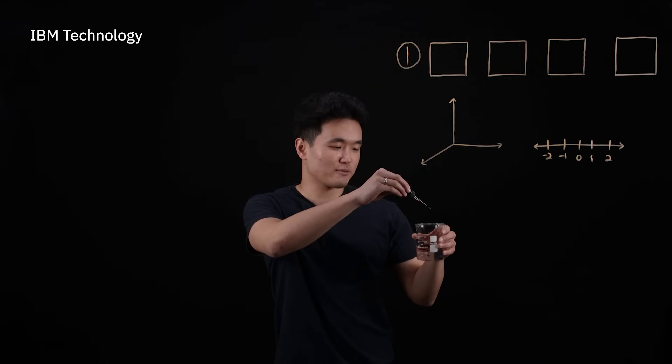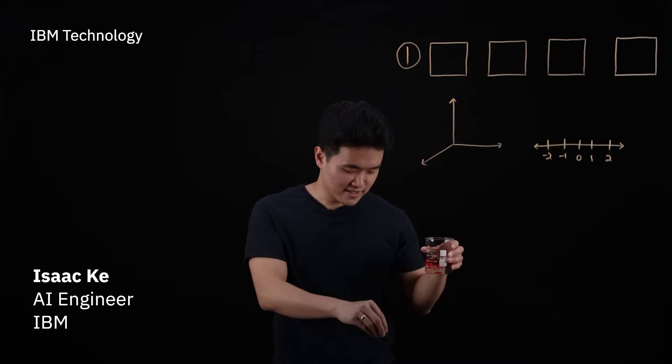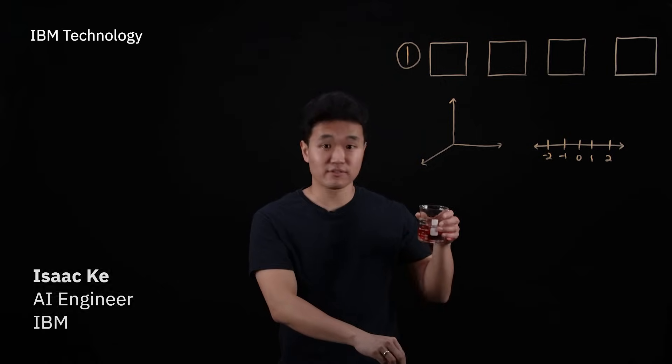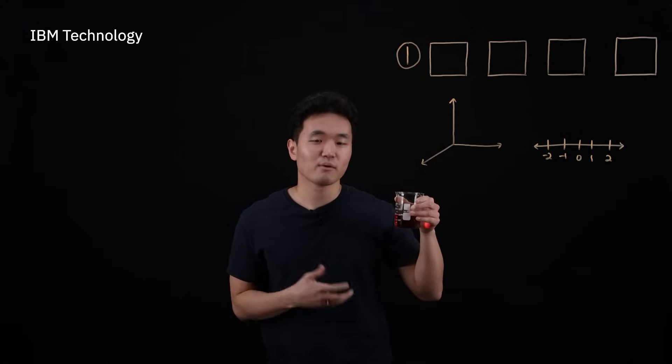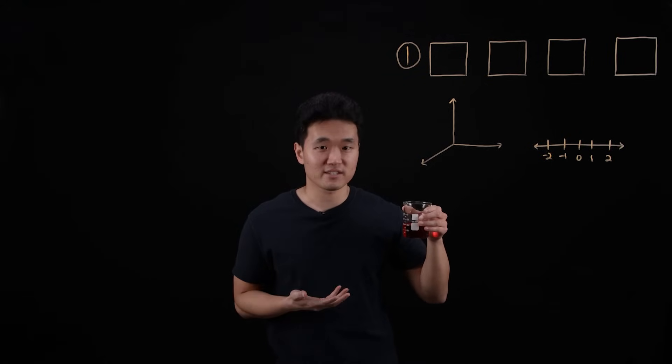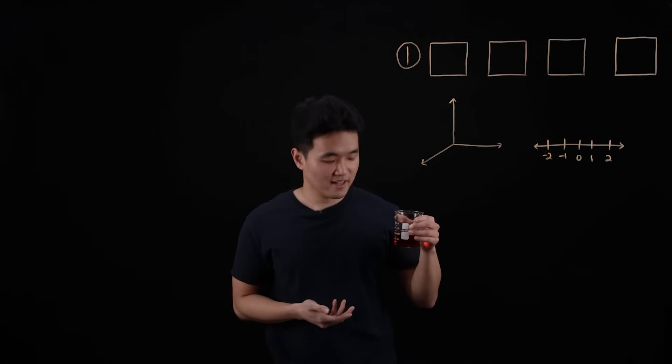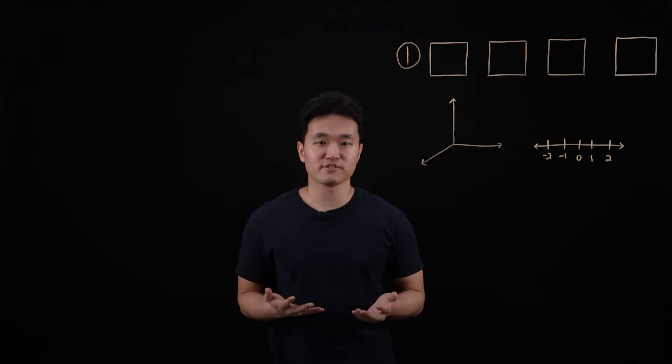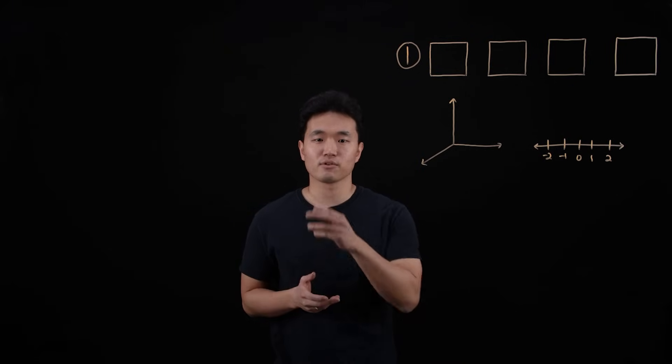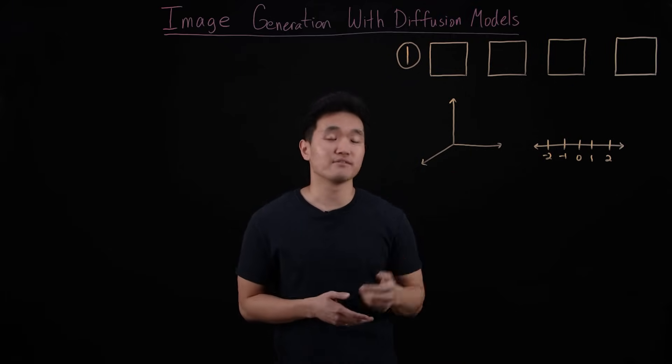If I drop red dye into this beaker of water, the laws of physics say that the particles will diffuse throughout the beaker until the system reaches equilibrium. Now what if I wanted to somehow reverse this process to get back to the clear water? Keep this idea in mind, because this concept of physical diffusion is what motivates the approach for text-to-image generation with diffusion models.